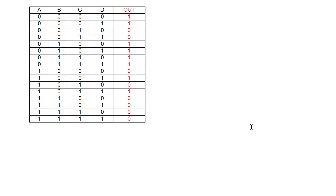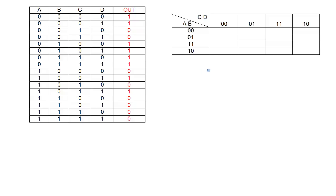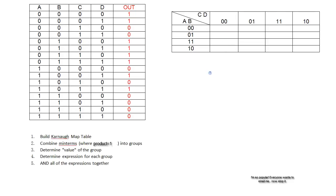Now let's look at 4-input K-maps. Starting with a 4-input truth table, the K-map needs more rows for the extra input. The rows are split by A and B counting in gray code: 00, 01, 11, 10. The columns are split by C and D: 00, 01, 11, 10. So the box where A equals 1, B equals 1, C equals 0, D equals 0 is found at that intersection. The steps for a 4-input Karno Map are the same as for a 3-input.